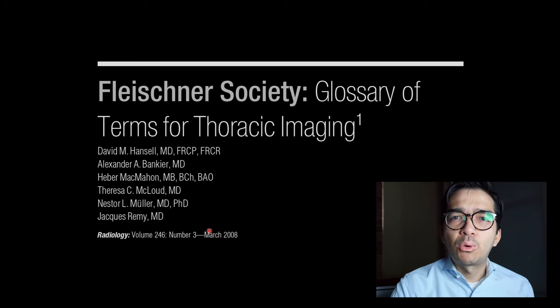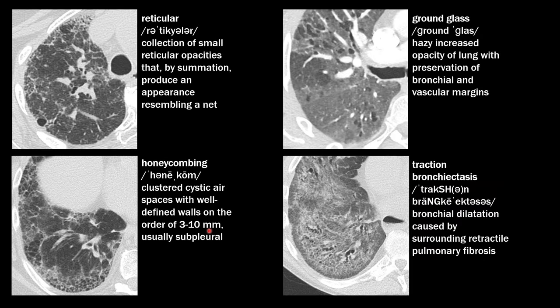The four main terms I always discuss in patients with interstitial lung disease are reticulation, ground glass opacity, honeycombing, and traction bronchiectasis. I usually talk about whether they're present or absent — so even if they're not there, I'll say there's no significant ground glass opacity or no significant honeycombing. I did a whole video about these four terms, so I recommend watching that if you haven't already.